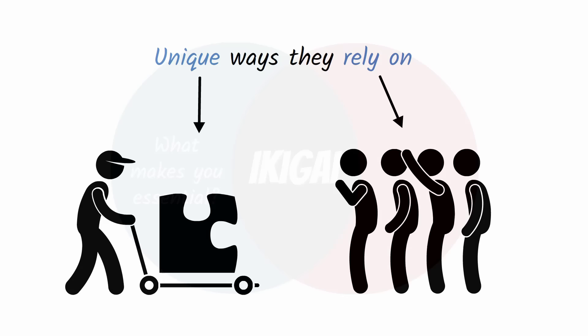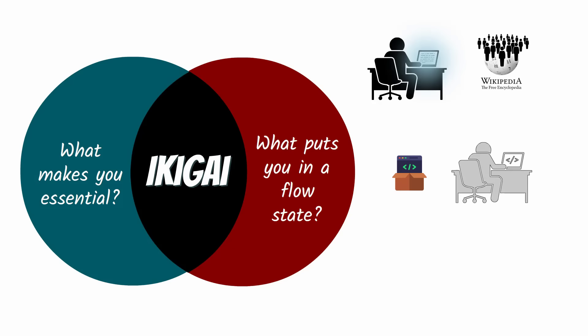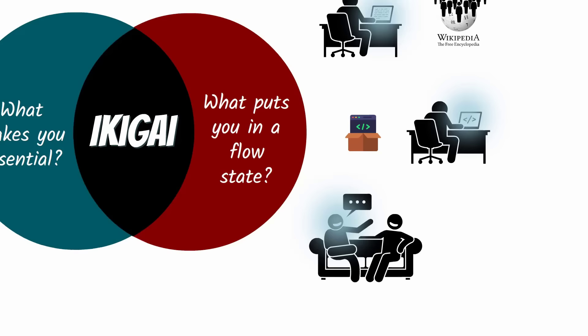Now the second circle of the two-part Ikigai model is what puts you in a flow state. Wikipedia curators experience their Ikigai by researching and writing in a state of flow to do work that is essential to the Wikipedia community. Open source software contributors find the sweet spot by programming in a flow state and improving the software their community relies on. Okinawans find the intersection between being essential and being in flow while interacting with members of their moai and making them feel heard and loved. A rare and highly underrated skill.